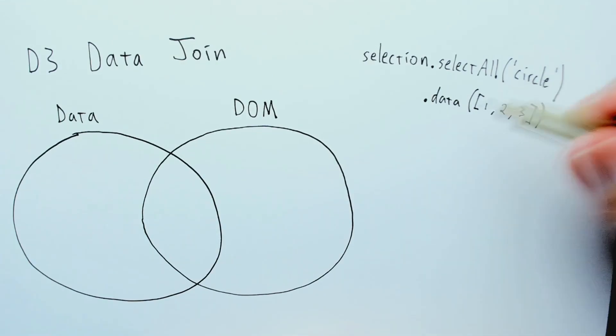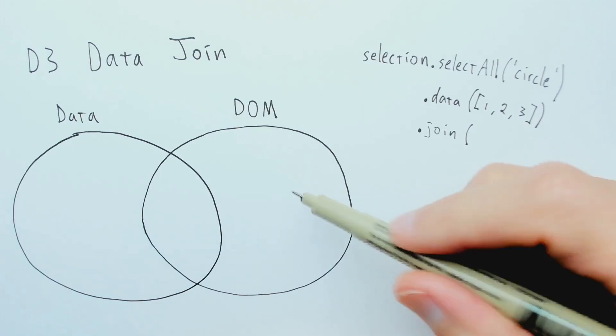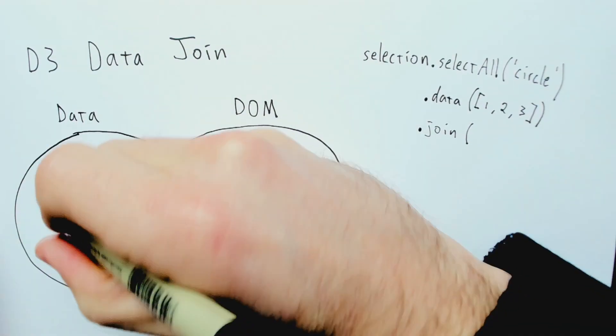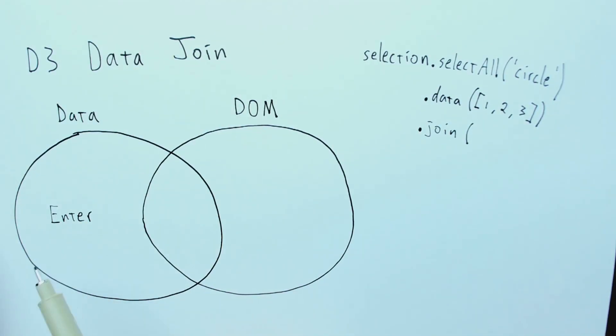Now D3 has all the information it needs to do the .join part. And the .join part considers these three different cases. The first case is enter. This enter case happens when, for a given data element, there is no corresponding DOM element. And with .join, we could say circle, but that's actually a shorthand.